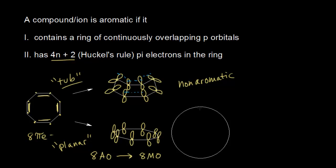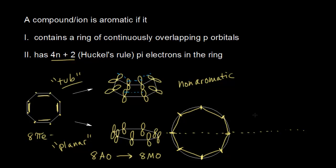This is what we saw in the last video — how to draw a Frost circle. I'm going to put a line through the center to help me inscribe the polygon. Since I have an eight-membered ring, I draw an eight-sided polygon, starting from the bottom. The important thing is where the polygon intersects with the circle — every point of intersection represents a molecular orbital. I can see a total of 8 molecular orbitals, because I have 8 points of intersection. The Frost circle shows the relative energies: I have 3 bonding molecular orbitals down here.